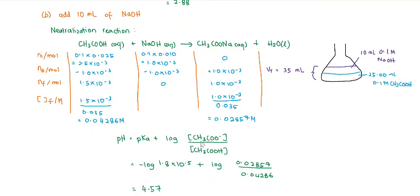For part B, when you add 10 mL of sodium hydroxide — so initially there is 25 mL of 0.1 molar acetic acid — at 10 mL of 0.1 molar NaOH added, the total volume changes to 35 mL. In your reaction table, you cannot use concentration anymore because the total volume has changed. So you use number of moles. Find the limiting reactant — since the base is going to finish up, the change in number of moles is 1.0 × 10⁻³.